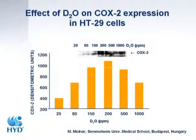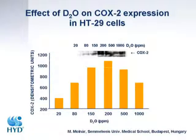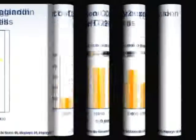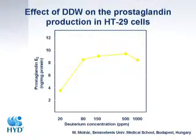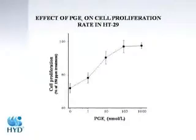What we could see was a clear correlation between the deuterium concentration and the expression of the COX2 gene. At the same time, we found a correlation between the prostaglandin concentration and the deuterium concentration: the lower the deuterium concentration, the lower the prostaglandin concentration.